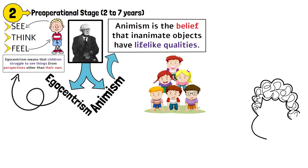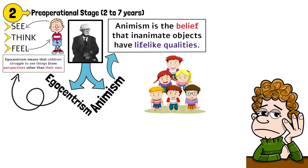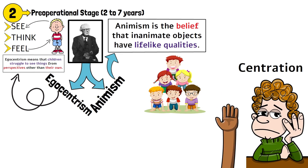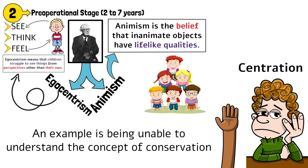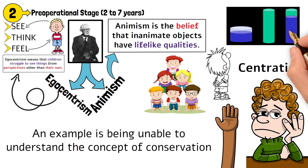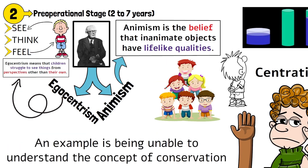During this stage, children also develop centration, where they focus on one aspect of a situation and ignore others, leading to errors in judgment. An example is being unable to understand the concept of conservation — they think that a taller glass holds more liquid than a shorter, wider one, even when both contain the same amount.